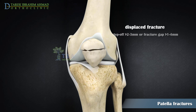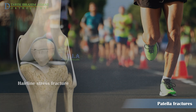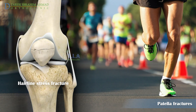In an open fracture, the bone breaks in such a way that bone fragments stick out through the skin, or a wound penetrates down to the bone. A fracture may be either displaced or non-displaced. In a displaced fracture, the broken ends of the bone are separated and do not line up correctly. The normally smooth joint surface may have also moved. Patella fractures are classified as displaced if there is greater than two millimeters of articular step-off or three millimeters of separation of the fracture fragments.